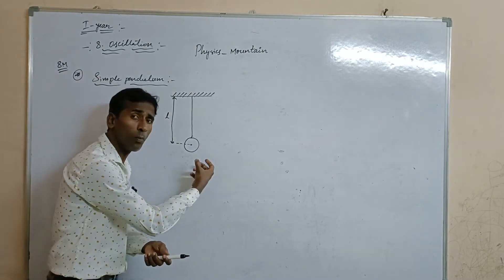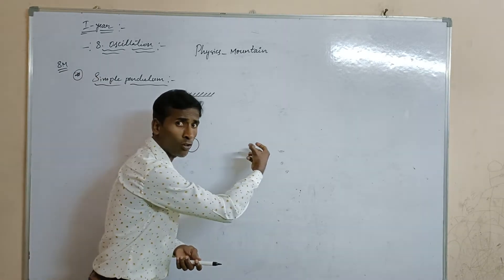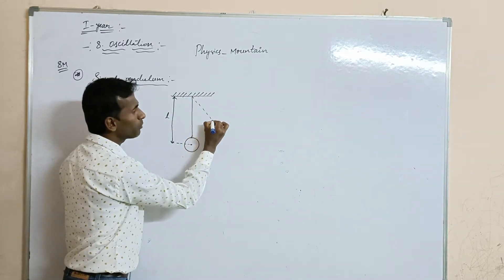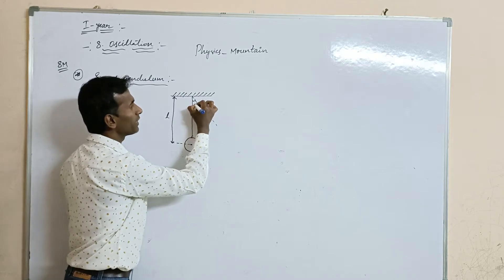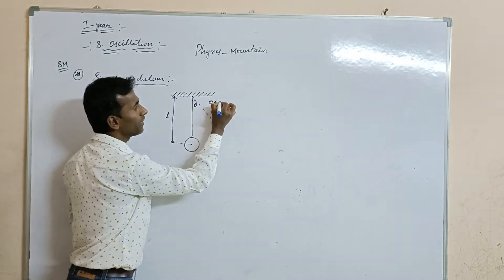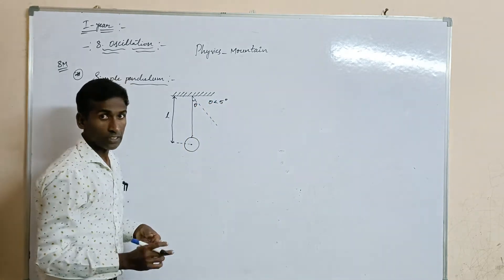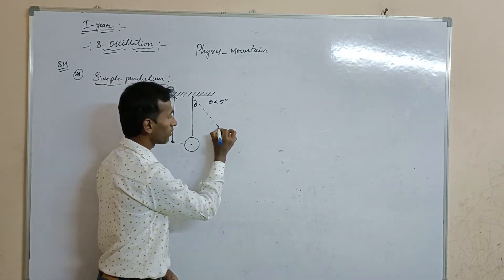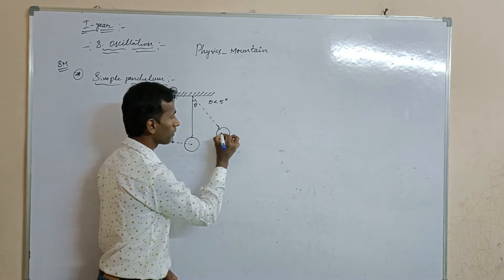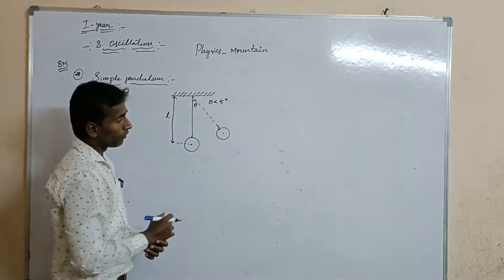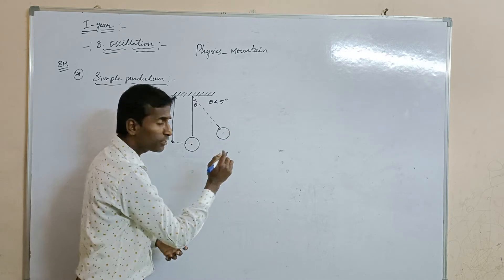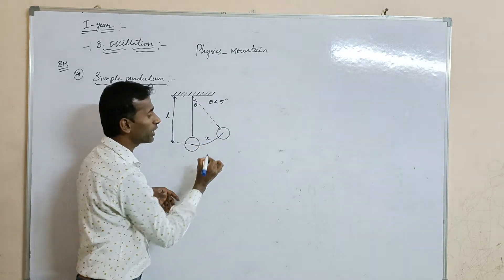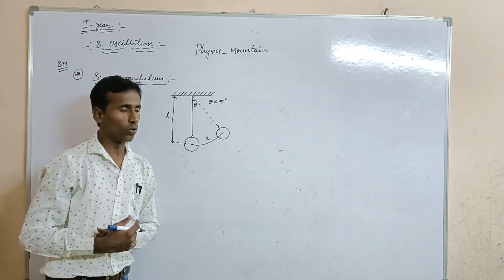Whenever you pull the bob with a small angular displacement, that angle is theta, and theta value is less than 5 degrees. Whenever you pull this bob as a small angular displacement, it will make an arc. That arc is denoted by the symbol X.